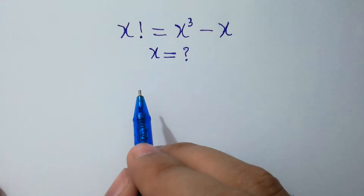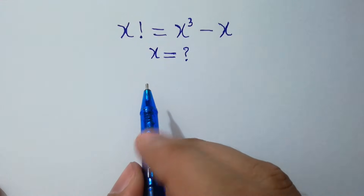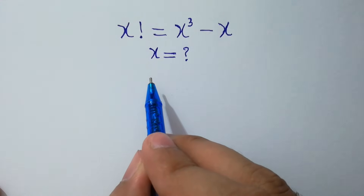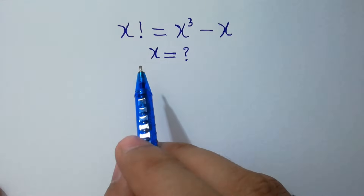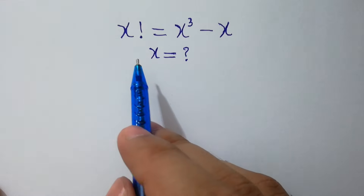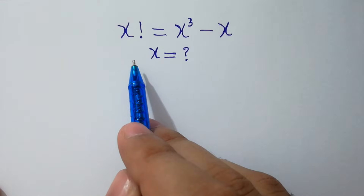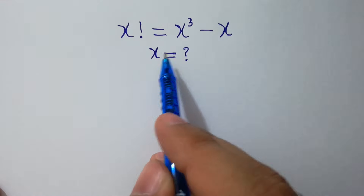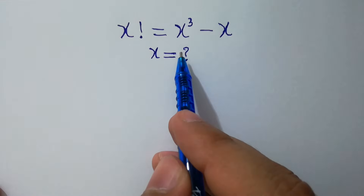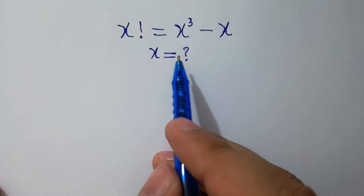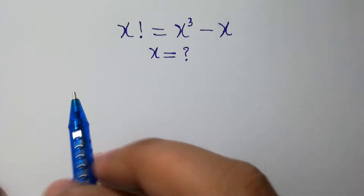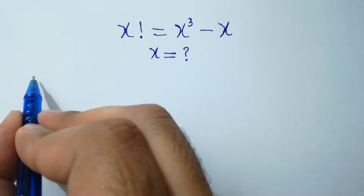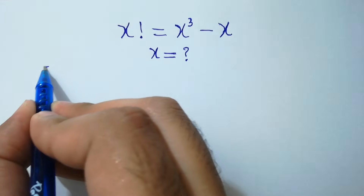Hello friends. Find the value of x if x factorial equals x cubed minus x. Let's solve it.